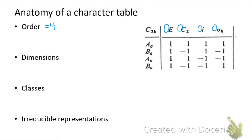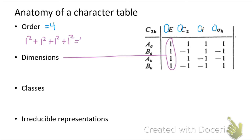The order is the same as the sum of squares of the dimensions. The dimensions are the numbers in the first column — the E column — and you see that they're all ones because everything is symmetric with respect to the identity operation. So we could calculate the order using the dimensions: one squared plus one squared plus one squared plus one squared equals four.